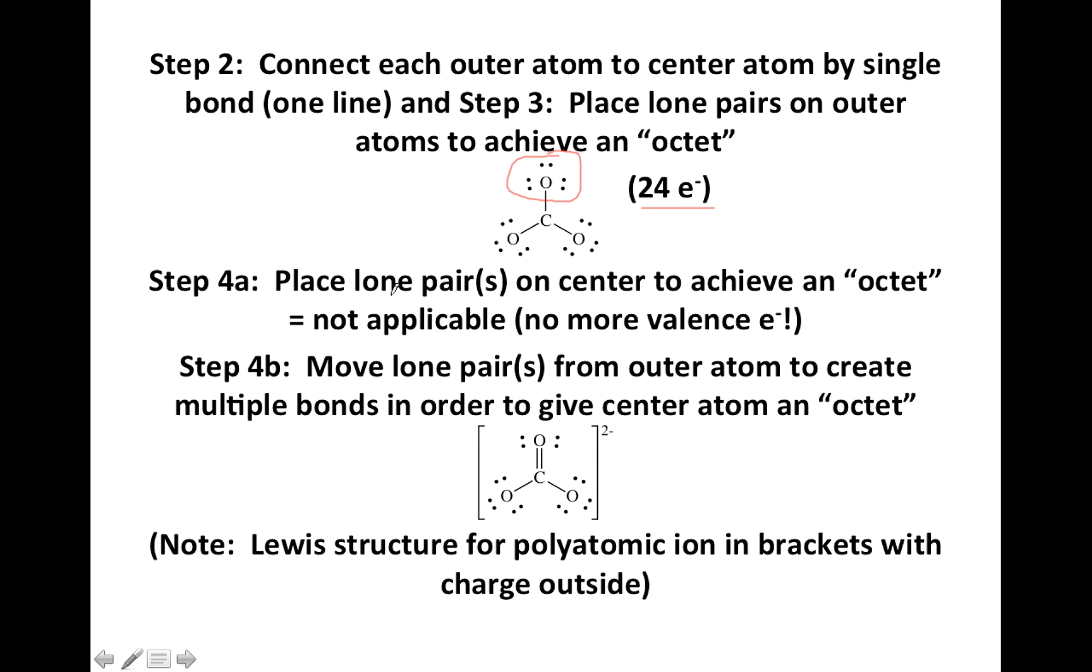Remember step four A said put your extra electrons on the center to get an octet. The only problem is we don't have any more valence electrons like we did in the last example. So I can't just throw an extra lone pair on the carbon. Step 4B says move a lone pair from one of the outer atoms to create multiple bonds in order to give the center atom an octet.